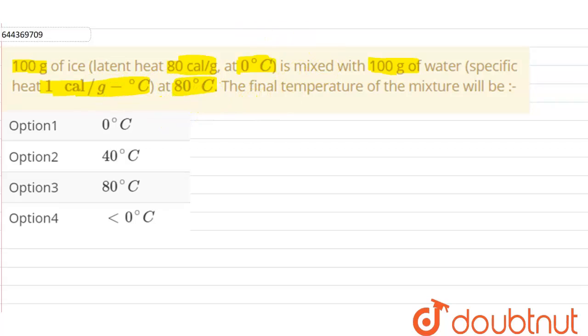In the given question, we have been given that the ice is mixed with water at 80°C. What will be the final temperature of the resultant mixture? When the ice is mixed with the water at 80°C, the ice will gain heat from the water.